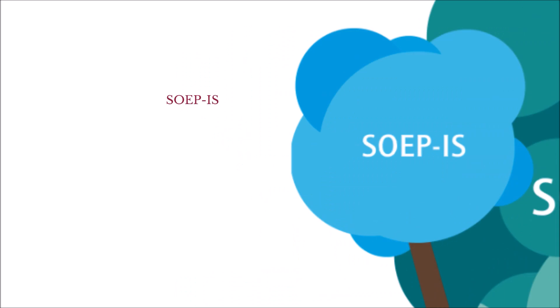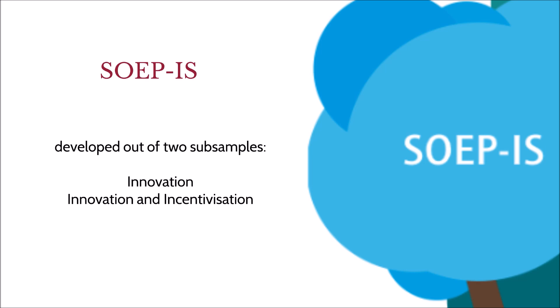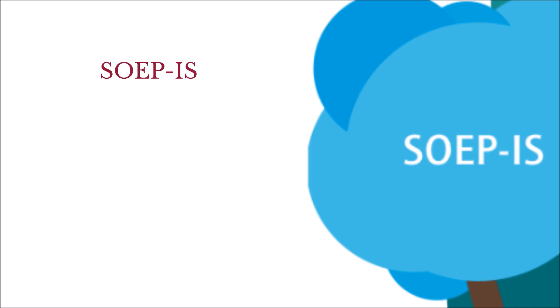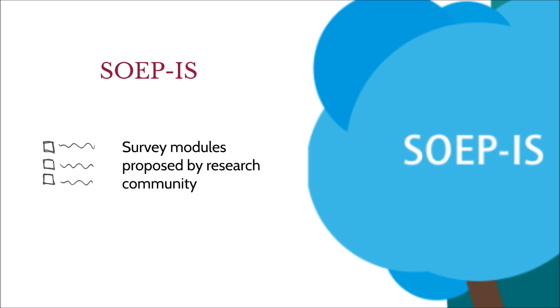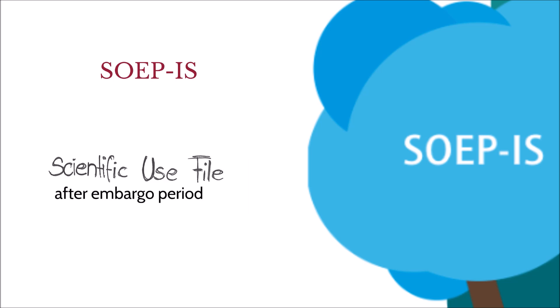The SOEP innovation sample, which has been in place since 2012, was developed out of two samples from SOEPCORE: the innovation sample and the innovation and incentivization sample. It covers about 5,500 people in 3,500 households. While the content of the SOEPCORE study is determined by the SOEP team, the content of the SOEP innovation sample comes from researchers outside the SOEP who propose their own survey modules. Researchers whose proposals are approved have exclusive access to the data for 12 months. After this embargo period, the data from the SOEP innovation sample are made available to registered users as a scientific use file.